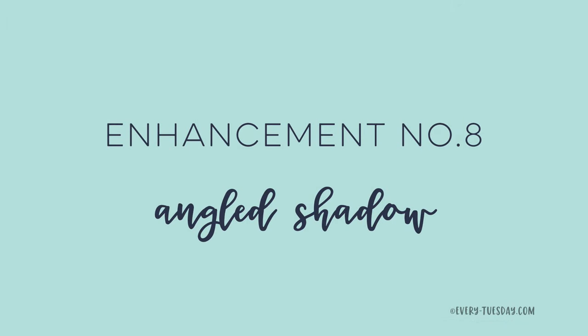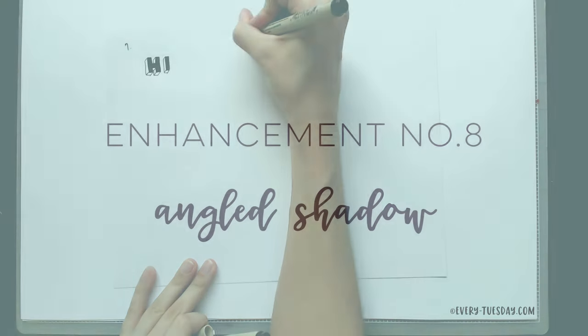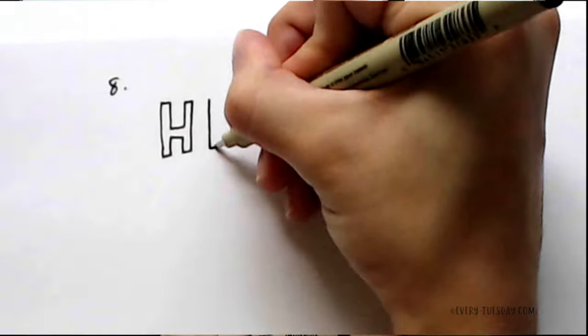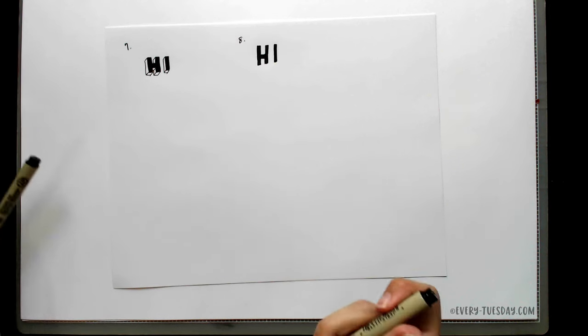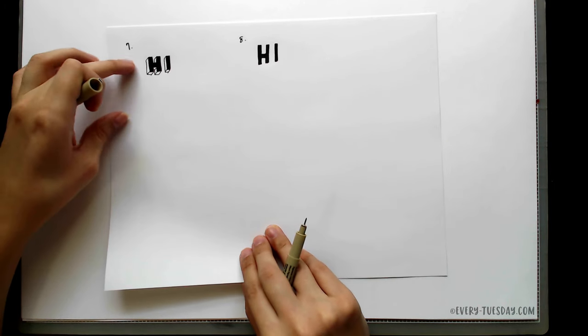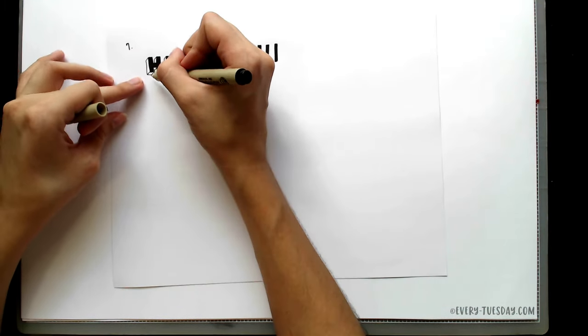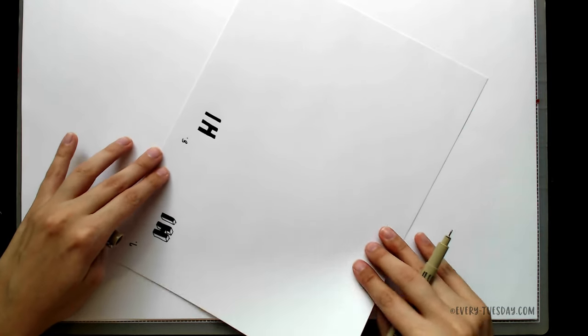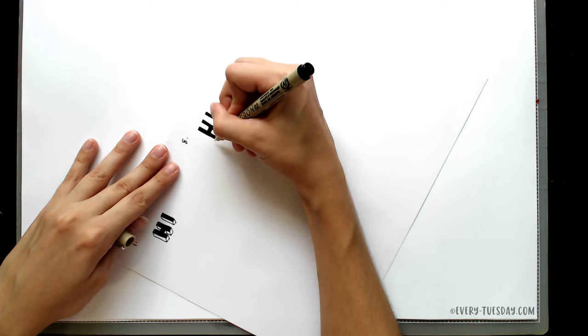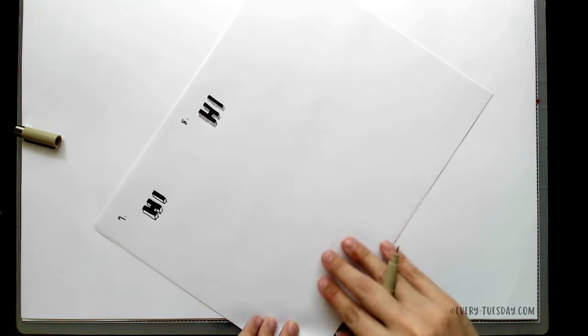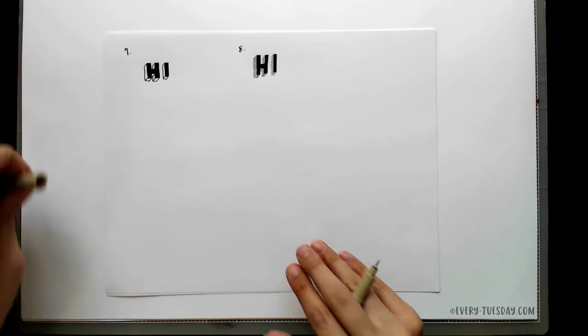On to number eight. Number eight is kind of a riff off of this 3D structure. What you're going to do is create your block letters again, and you're going to draw some repeating stripes. They're all going to be the same angle and try to make them as consistently spaced as possible. This is going to create that faux shadow. Whereas this one's connected and all blocky, this one's going to be more floating and soft. I'm going to turn this so it's easier for me, and you're just going to create stripes all the way down. That is our angled shadow.